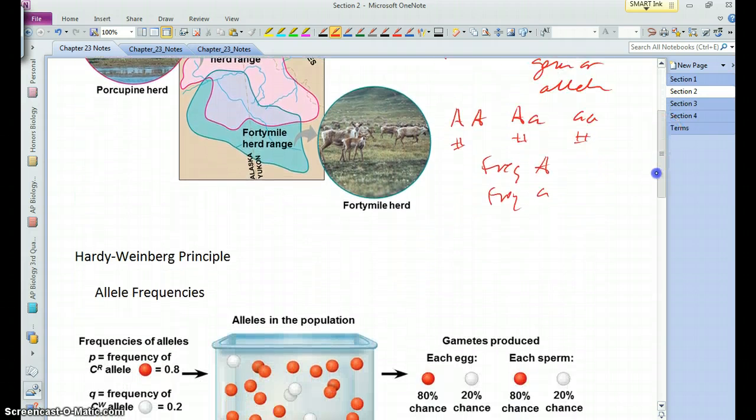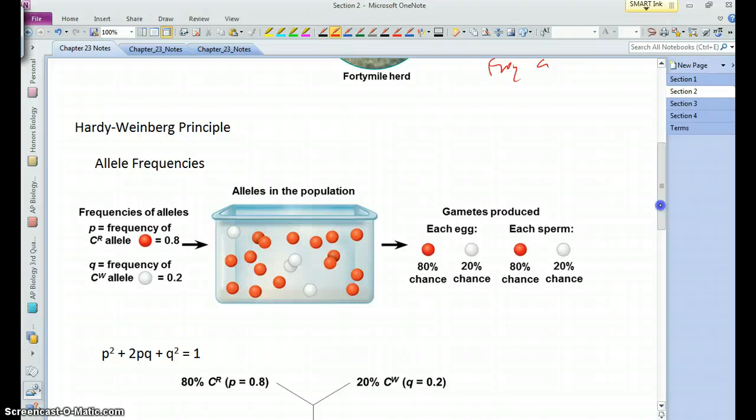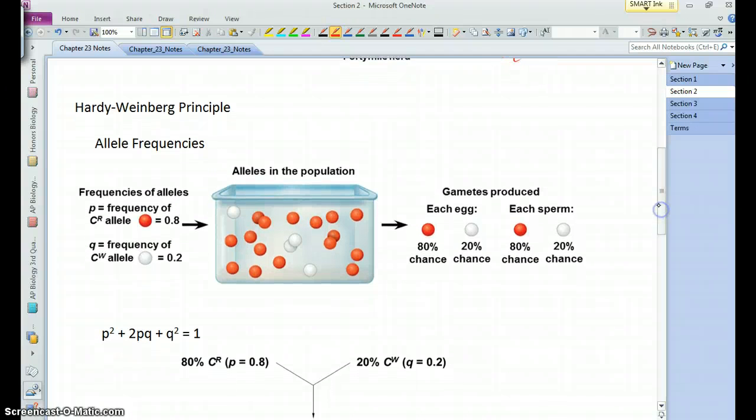And so Hardy-Weinberg is very much concerned with and related to these allele frequencies and genotype frequencies that you see in a population. So, when you think of a population, you can think of not only the individuals in the population, but all of the alleles in that population.